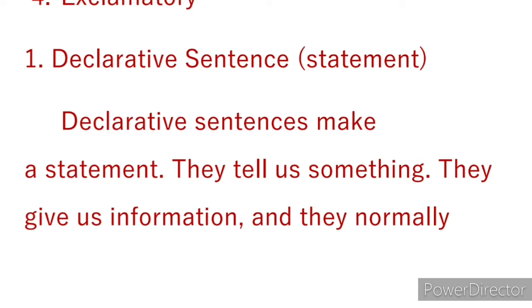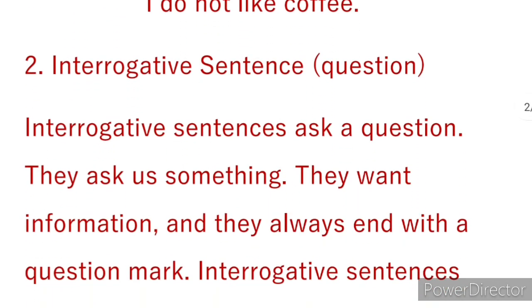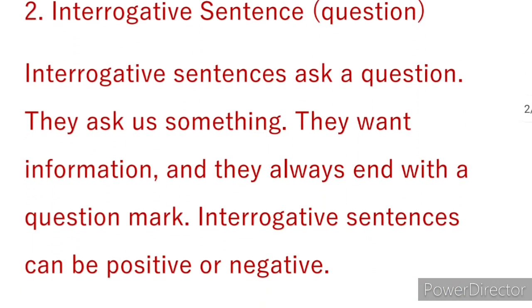The first type is the declarative sentence. Declarative sentences make a statement — they tell us something and give us information. They normally end with a full stop. Declarative sentences can be positive or negative. For example, 'I like coffee' is positive, and 'I do not like coffee' is negative.